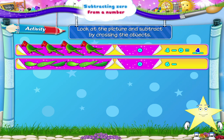Six minus zero is equal to blank. One, two, three, four, five, six leaves. Cross out zero leaves. That means crossing out nothing. So, six minus zero is equal to six.